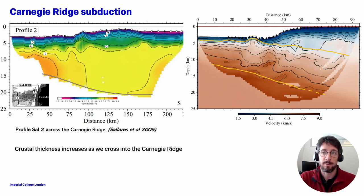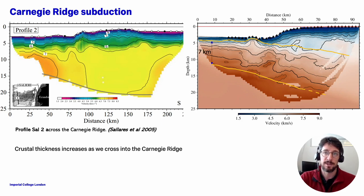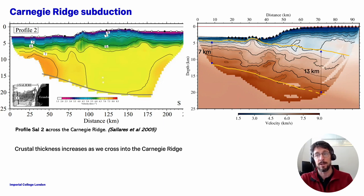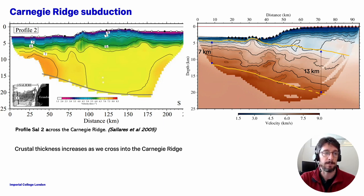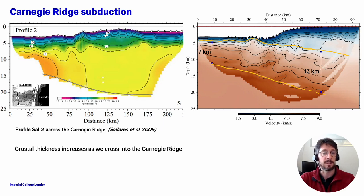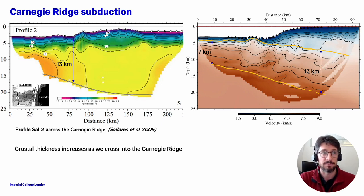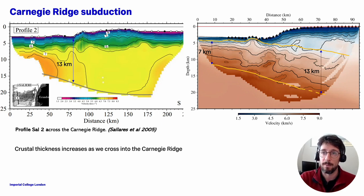Now let's have a look at the properties of the slab more widely. We have picked the Moho depth based on the 7.5 km/s velocity contour. On the western end of the profile the crustal thickness is 7 km — just slightly thickened — but on the eastern end this is almost double at 13 km. We can compare these thicknesses to those found across the Carnegie ridge, using a profile from Sallares et al. 2005 that crosses the ridge from north to south. We find that 13 km is close to the full thickness of the ridge, meaning that on our west-to-east profile we are crossing into the Carnegie ridge domain.